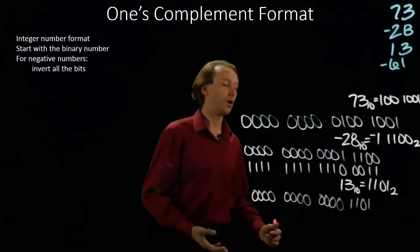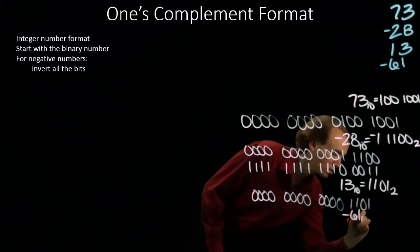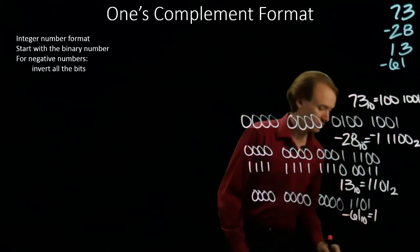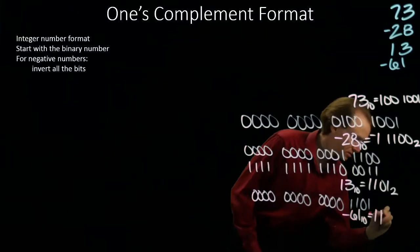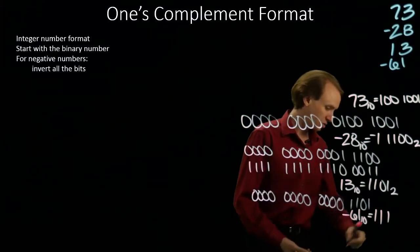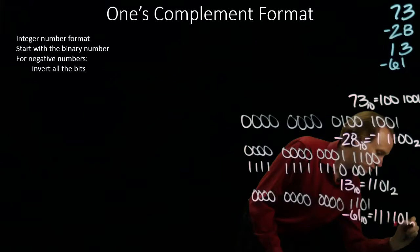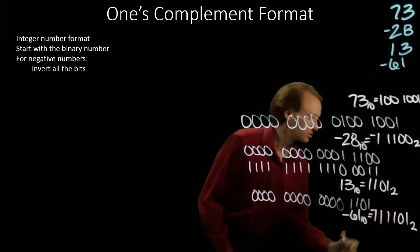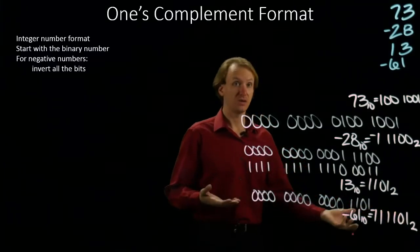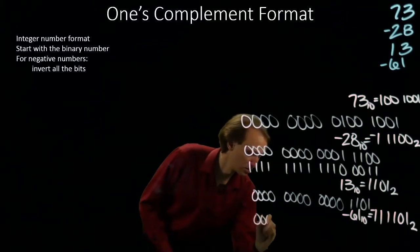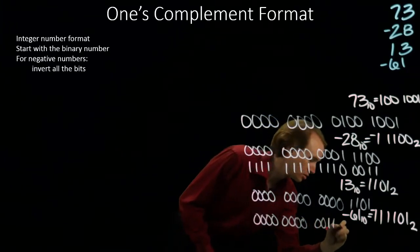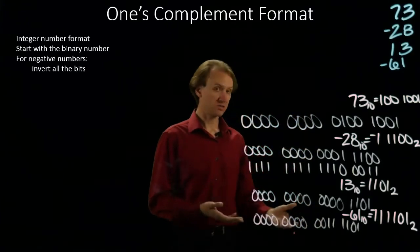Our last number is negative 61. So, negative 61 is 32 plus 16 gives me 48 plus 8 gives me 56. So, I need 5 more. So, there is my number in binary. I'm going to start by just writing my magnitude as a positive number. I'll use 16 bits. So, there is positive 61.